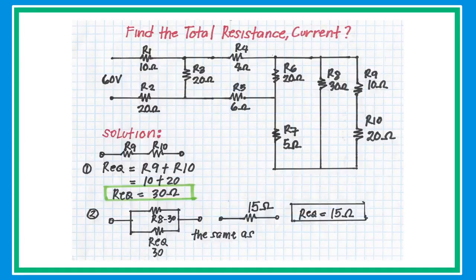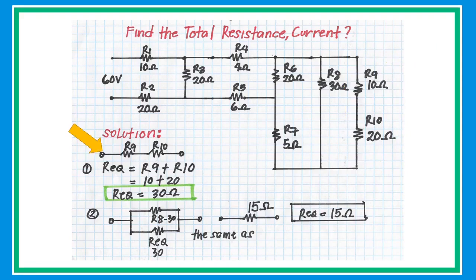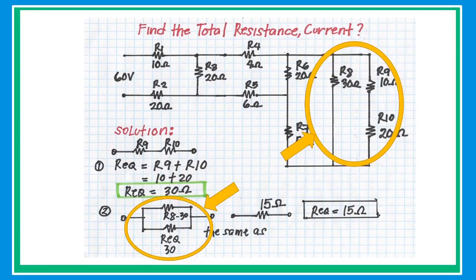In this more complex example, we collapse the circuit step by step. First, attack R9 and R10, which are connected in series: R equivalent equals R9 plus R10, giving 30 ohms. This is in parallel with R8, also 30 ohms. Since they are the same value, get half — which is 15 ohms.